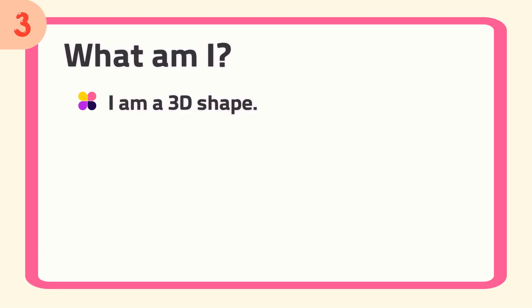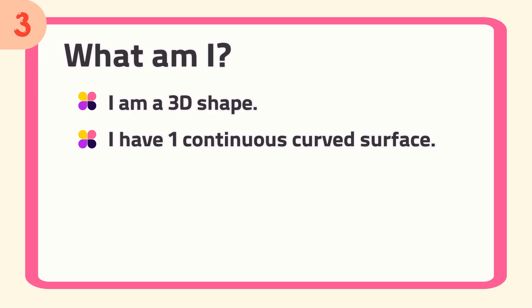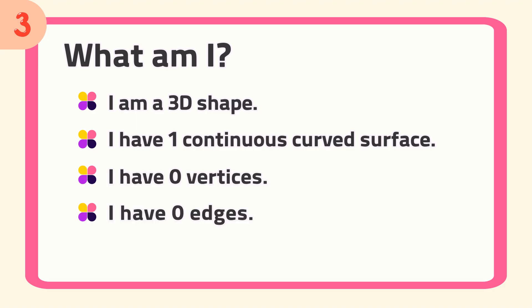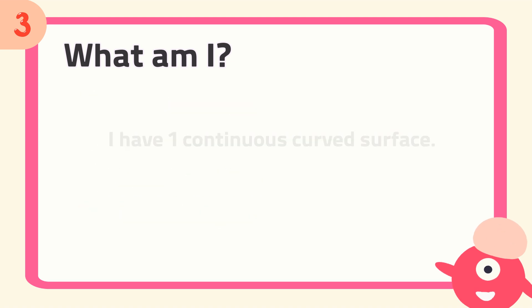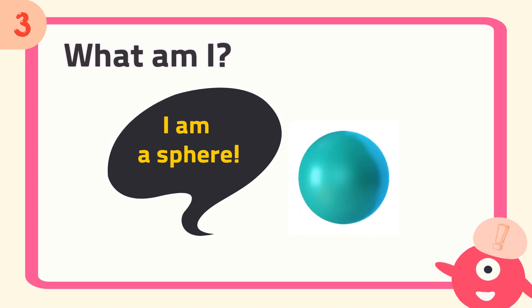Number 3. What am I? I am a 3D shape. I have 1 continuous curved surface. I have 0 vertices. I have 0 edges. The answer is... I am a sphere.